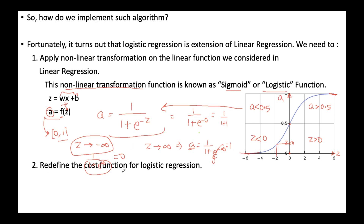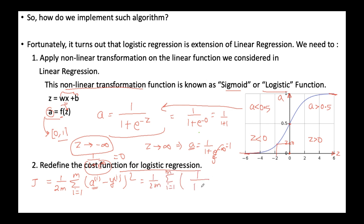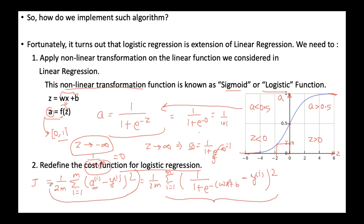The second point is redefining the cost function for logistic regression. In linear regression we used (1/2m) × Σ(aᵢ − yᵢ)², where aᵢ is the outcome. If we plug in a = 1/(1 + e^(−(wx+b))), this function turns out to be non-convex. If the cost function is non-convex, it will be very difficult for gradient descent to converge to the global minimum. That's why we will not use the mean squared error cost function — we will use a different cost function, which we will discuss later in detail.